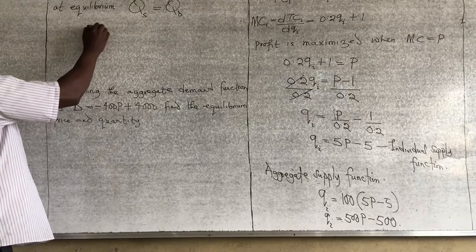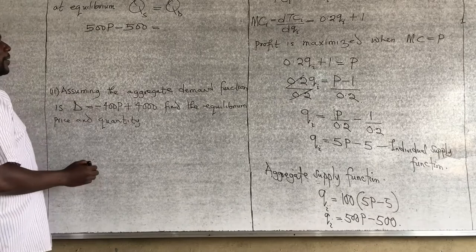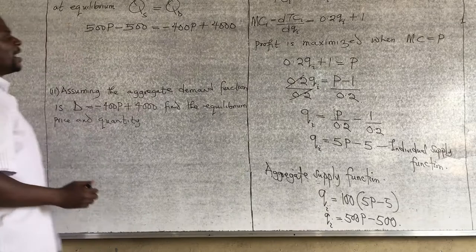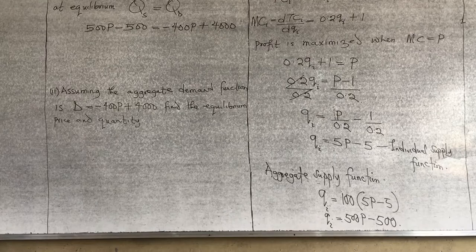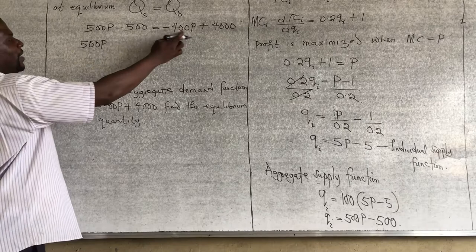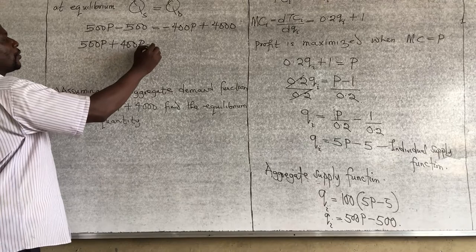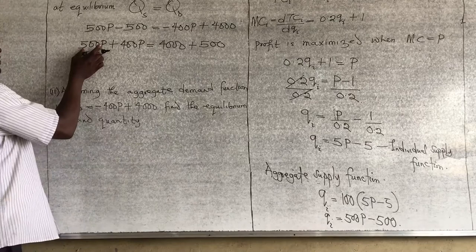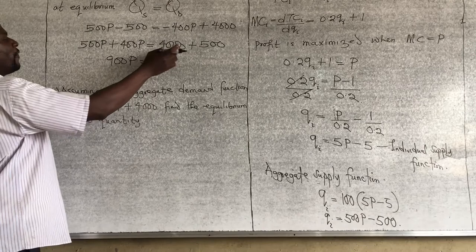Our aggregate supply is 500P minus 500, and our aggregate demand is minus 400P plus 4000. Setting them equal: 500P minus 500 equals minus 400P plus 4000. Moving terms: 500P plus 400P equals 4000 plus 500, which gives 900P equals 4500.